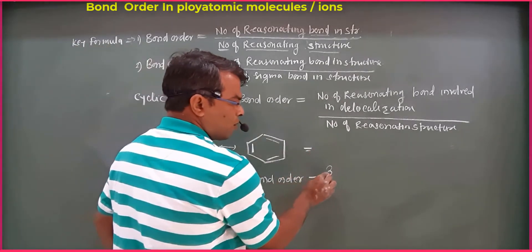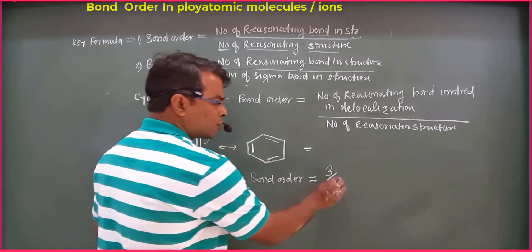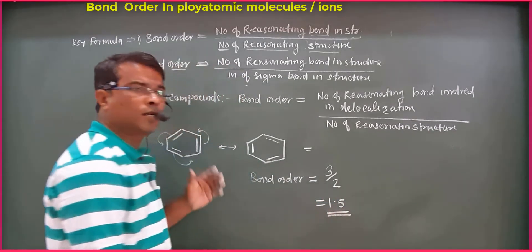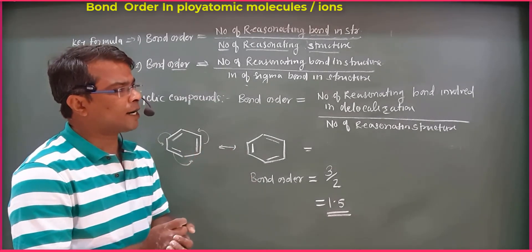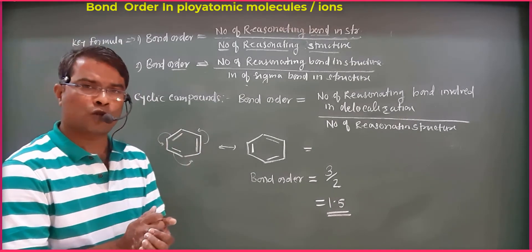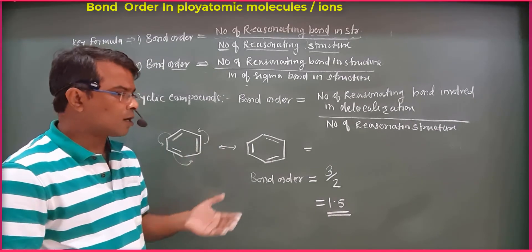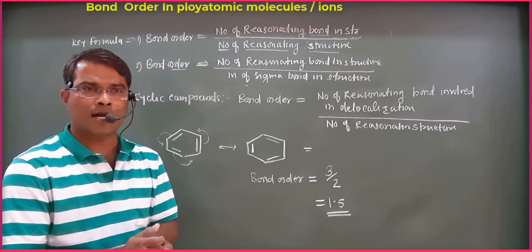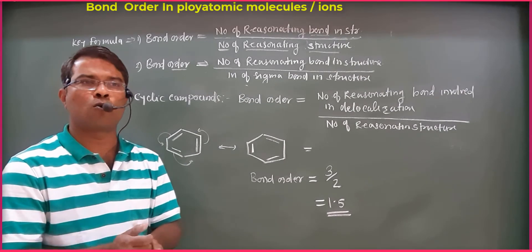For benzene, the number of bonds involved in delocalization is 3, and the number of resonating structures is 2. Therefore the bond order of benzene is 1.5. If you have polyatomic ions and polyatomic molecules and you calculate bond order using this method, you can solve any such problem. You can also apply this to homo-diatomic molecules and their ions.